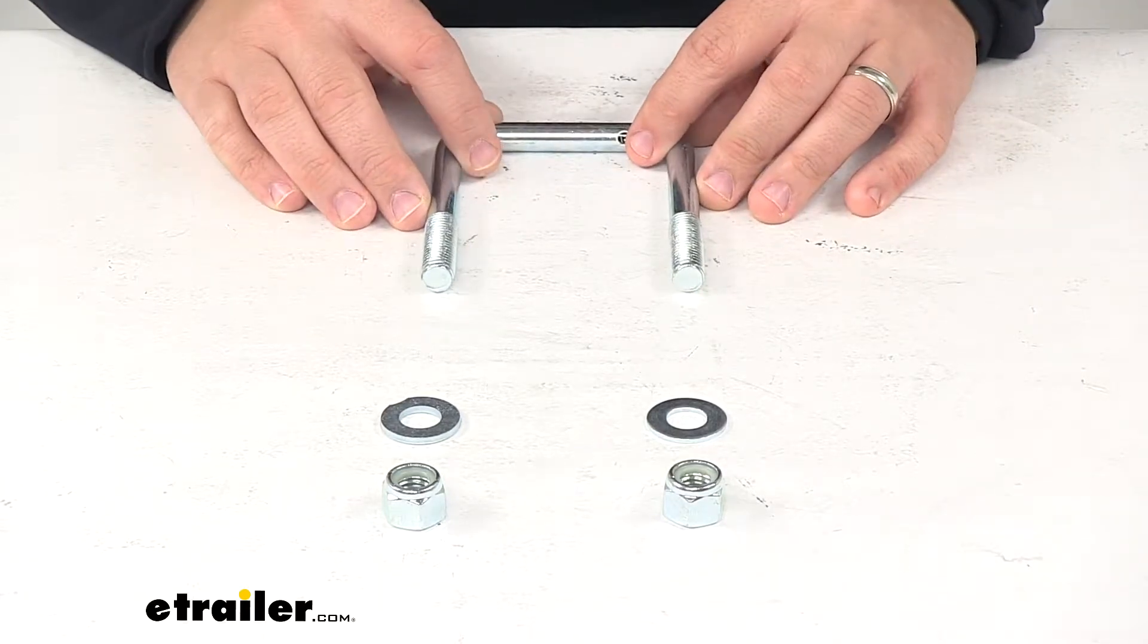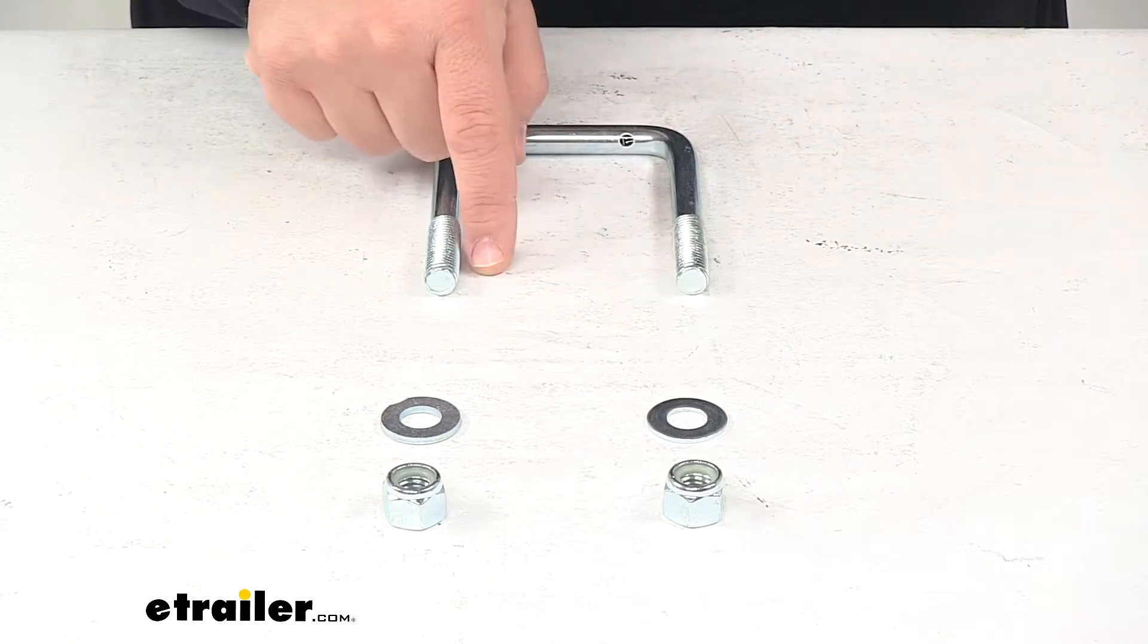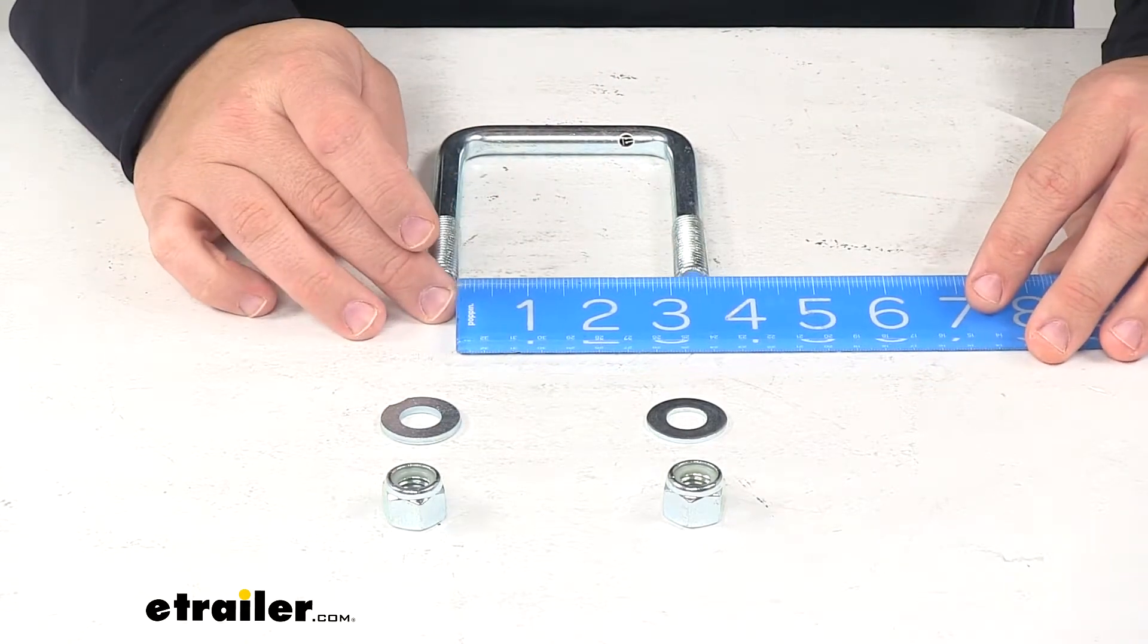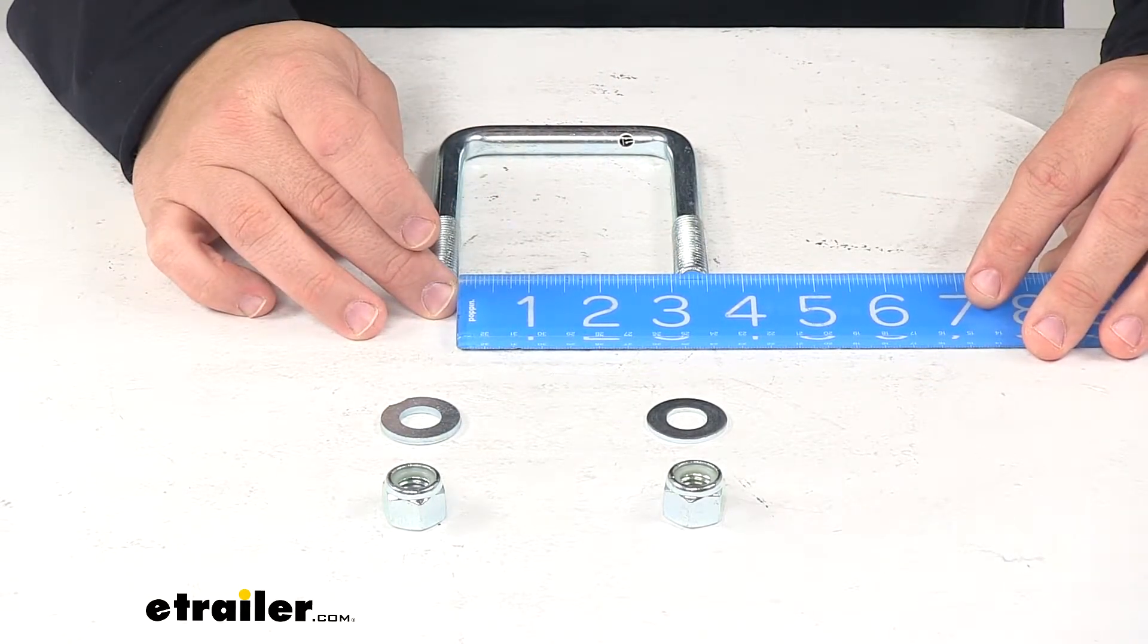A few measurements to go over real quick. Starting with the inner width, that's measured inside edge to inside edge, which gives us three inches.